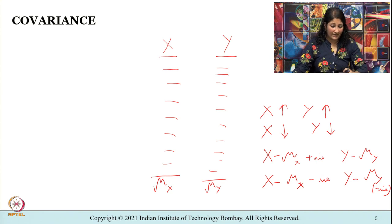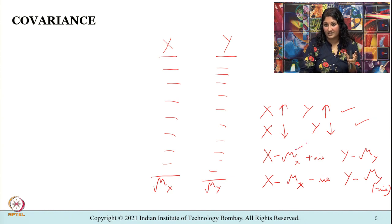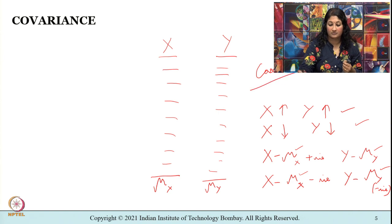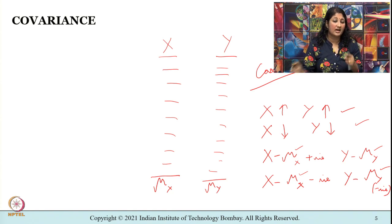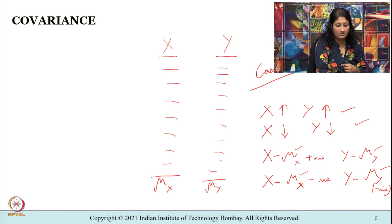If large values of x often result in large values of y, or smaller values of x result in smaller values of y, then positive (x minus mu_x) will often result in positive (y minus mu_y), and negative (x minus mu_x) will often result in negative (y minus mu_y). This is case 1 — both variables are moving together. By covariance we want to estimate how two variables are moving together, which you can visualize using the Cartesian coordinate system in Euclidean space.